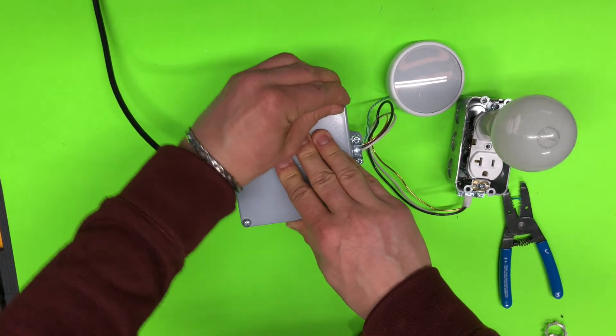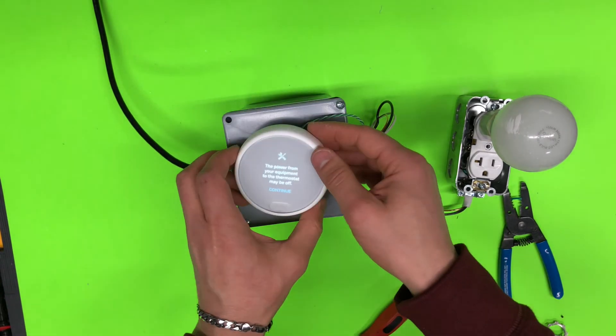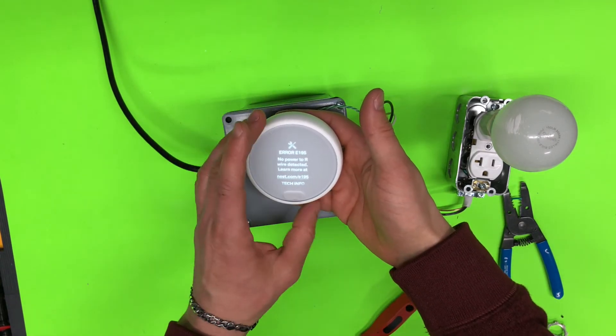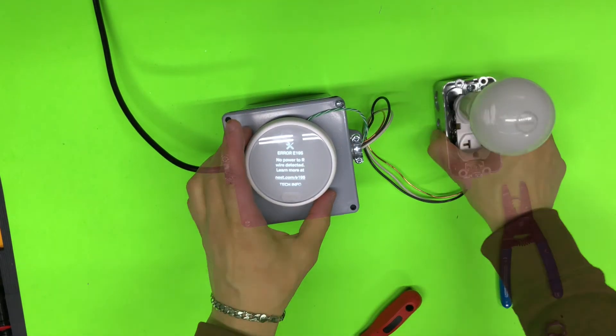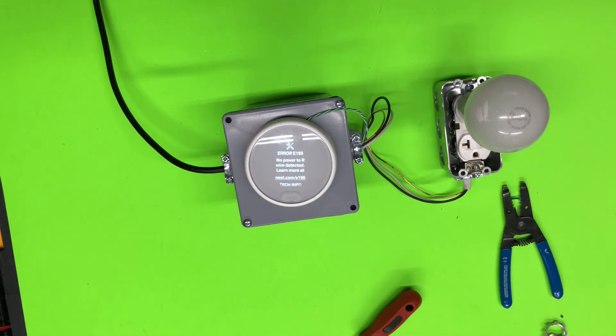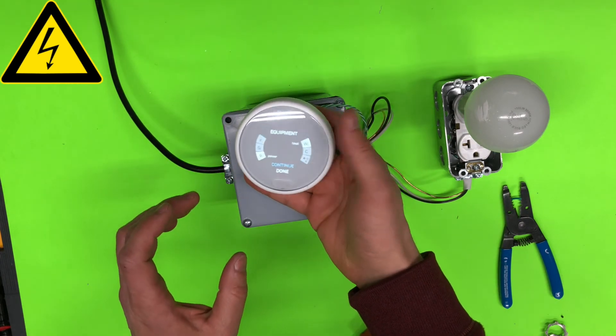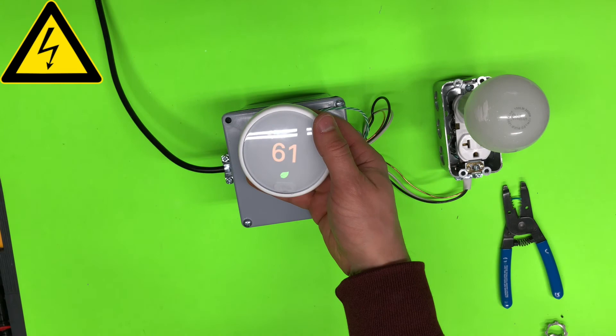So we have our thermostat which is complaining that we don't have power, but as soon as I will turn on power, the thermostat sees that wires power and heat is connected. So now we can test it.